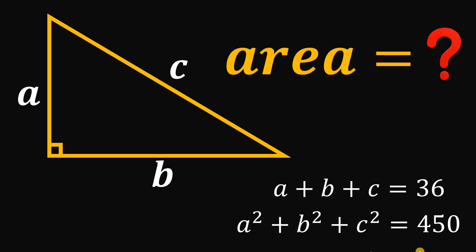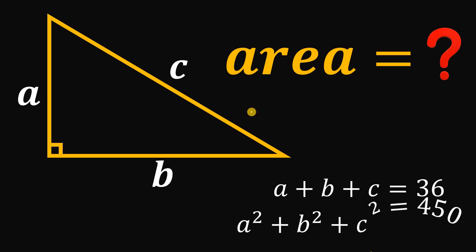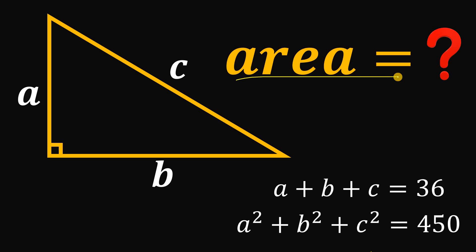For today's video, we will answer a geometry challenge coming from one of our followers. The question goes like this: given a right triangle with side lengths A, B, and C, and also given that A plus B plus C equals 36, and A squared plus B squared plus C squared equals 450, our goal is to find the area of this right triangle.